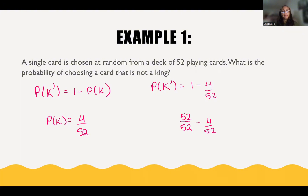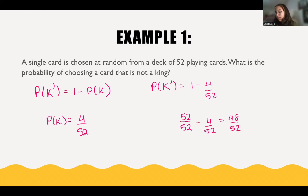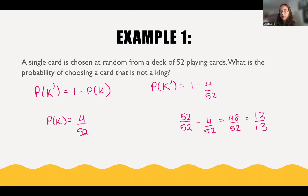So 52 minus 4 is going to be 48 over 52, and 48 over 52 simplifies to 12 over 13. So the probability of choosing a card and it not being a king is going to be 12 over 13.